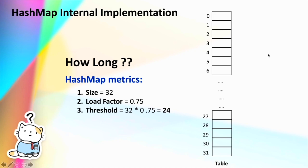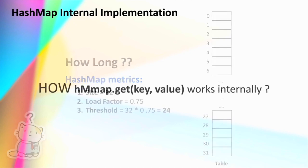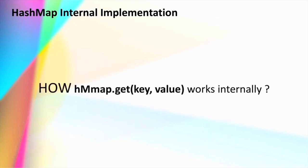Since we are using an array of nodes, the average time complexity of inserting an element within the HashMap is O(1) — that is, constant time complexity. Now let's see how the get method — the way of retrieving a value from the HashMap — works internally.